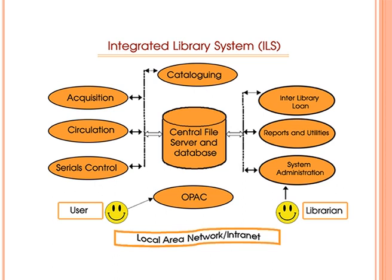An integrated library management system shares a common database to perform all the basic functions of a library. In the core of the system, there is a central database, and all modules — acquisition, cataloging, circulation, and serials controls — are seamlessly interconnected with this central pool of data. Users can fetch data through OPAC from this central pool. So whenever you change something in the acquisition module, it will automatically flow to the cataloging module seamlessly.